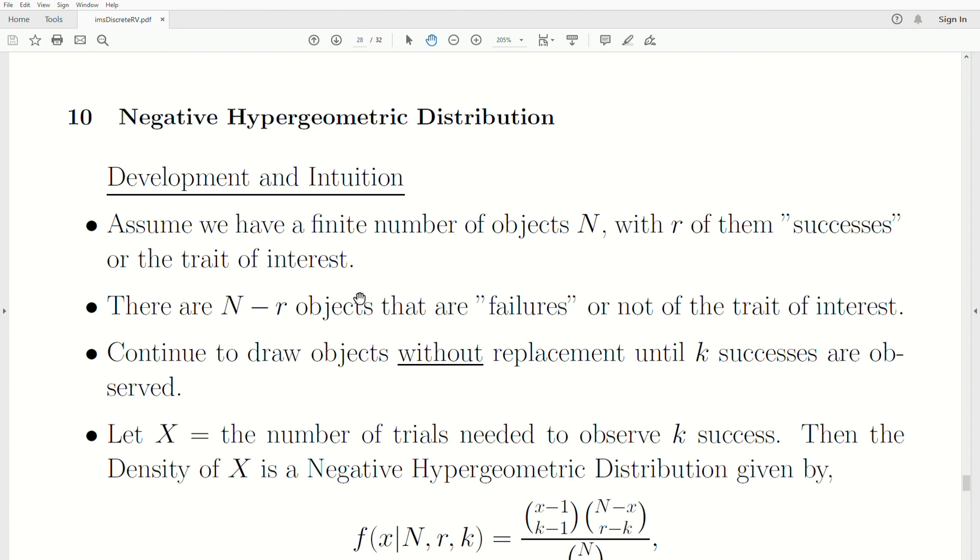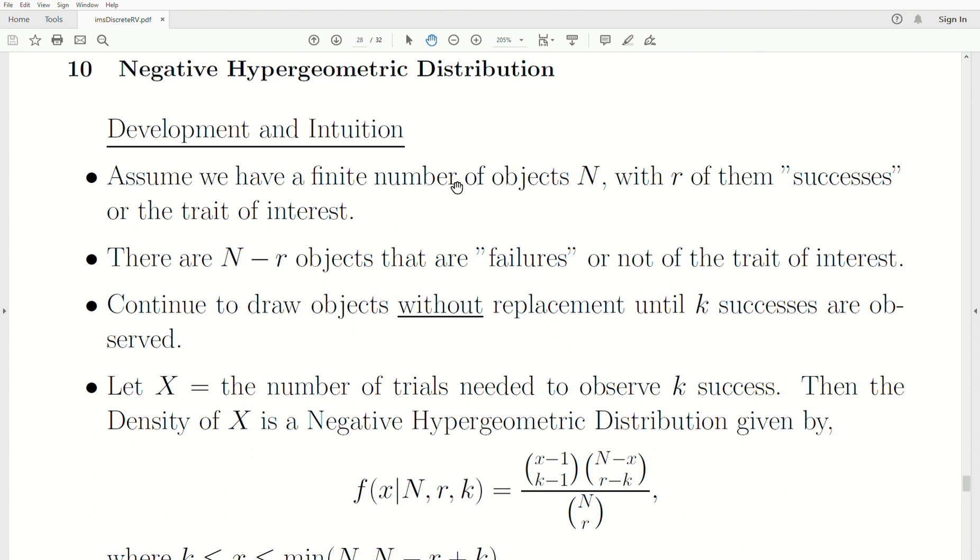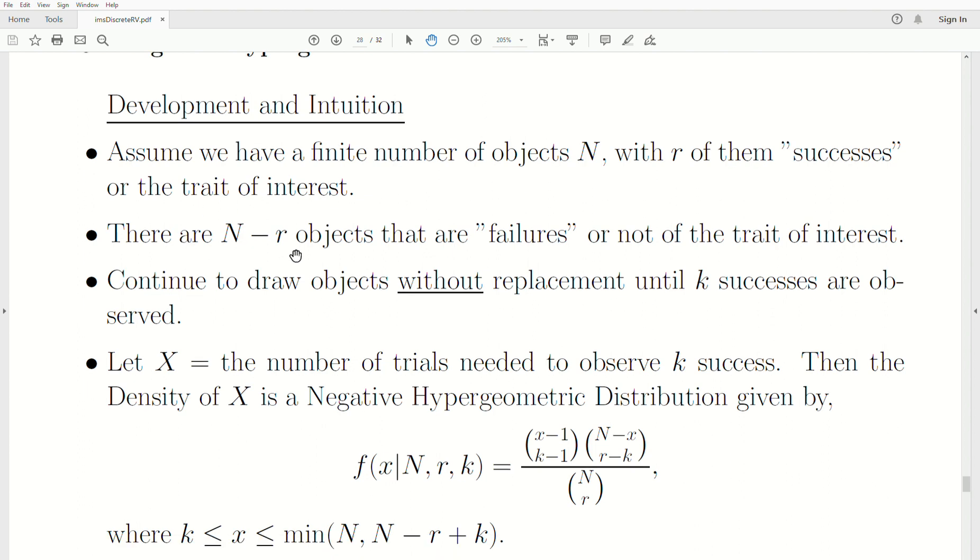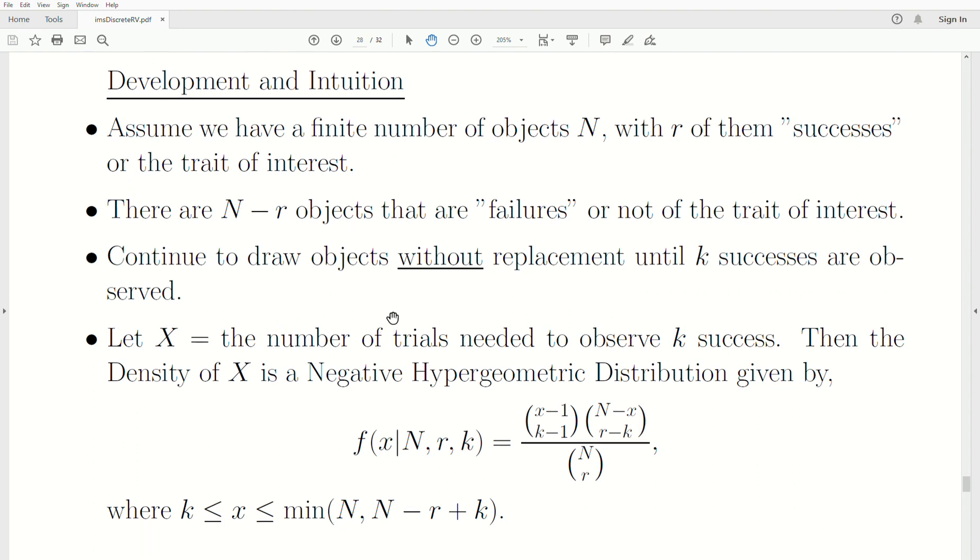Assume we have a finite number of objects, capital N, with r of them successes or the trait of interest. That means N minus r objects are failures or not the trait of interest. We're going to continue to draw objects without replacement until k successes are observed.